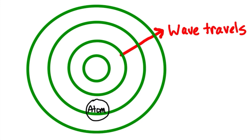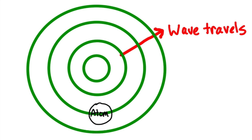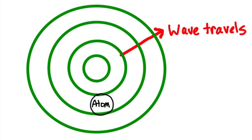The green circles represent the waves traveling radially outward as shown by the direction of the red arrow. The particles oscillate as shown by the atom.